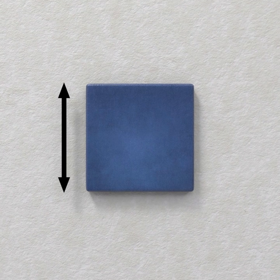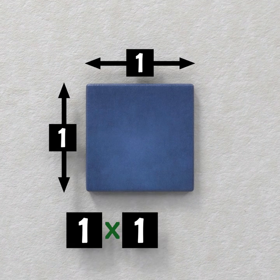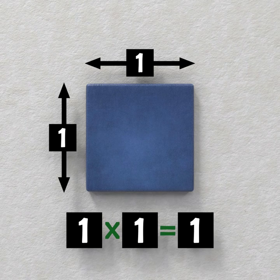The area would be the length times the width, which are both 1. This would give us 1 times 1, or 1 squared, which is positive 1.